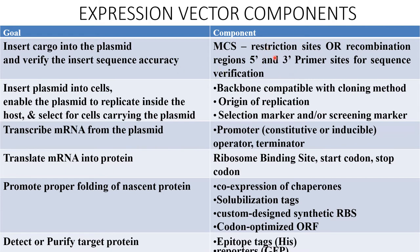The required components to achieve the goal of transformation: first, the insert cargo — the gene of interest is inserted into the plasmid and the insert sequence accuracy is verified. The compound used for this is the multiple cloning site, or a restriction site, or a recombinant region with 5-prime and 3-prime sites for sequence verification.